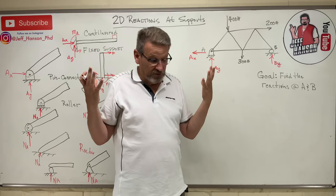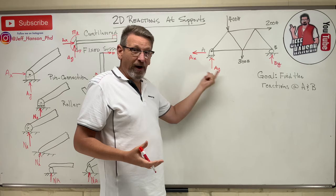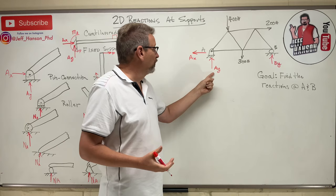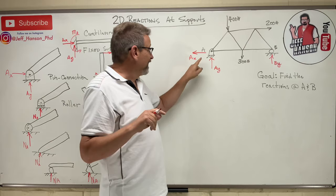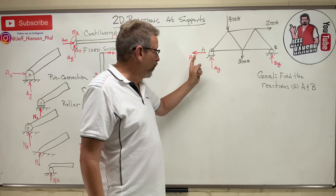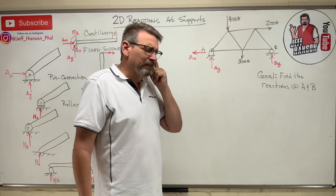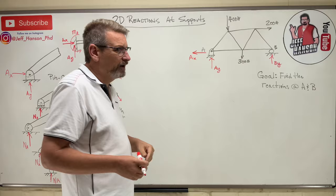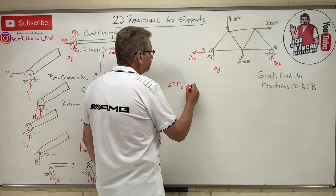If you guess the direction and solve for a reaction and get a negative value, that just means you guessed the wrong direction — no big deal. To solve this 2D problem, we have three equations: sum of forces in x, sum of forces in y, and sum of moments about some point.